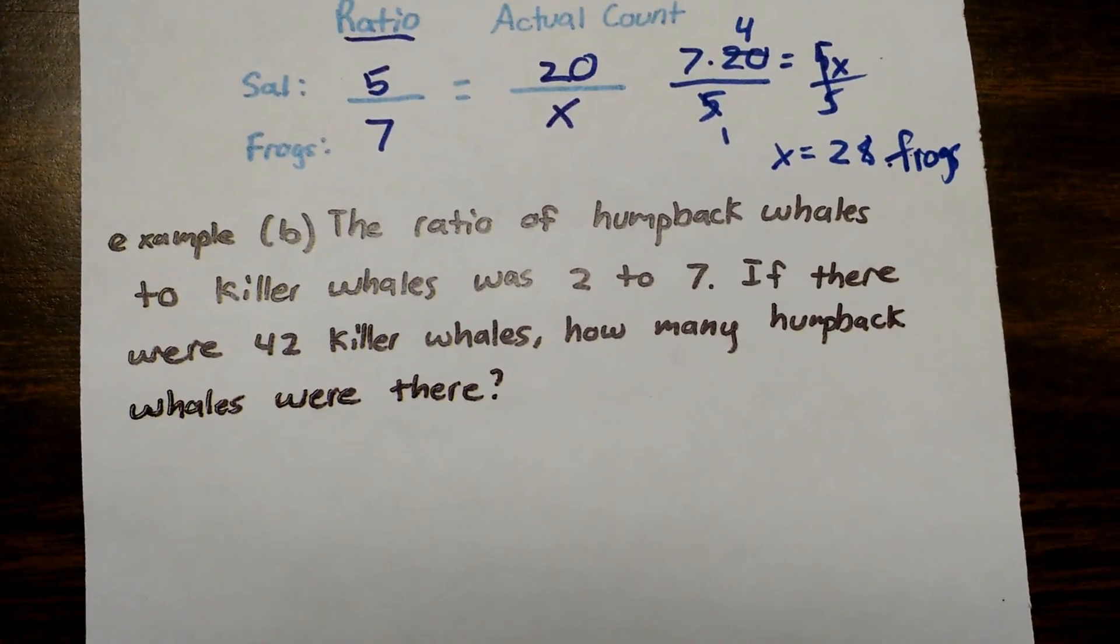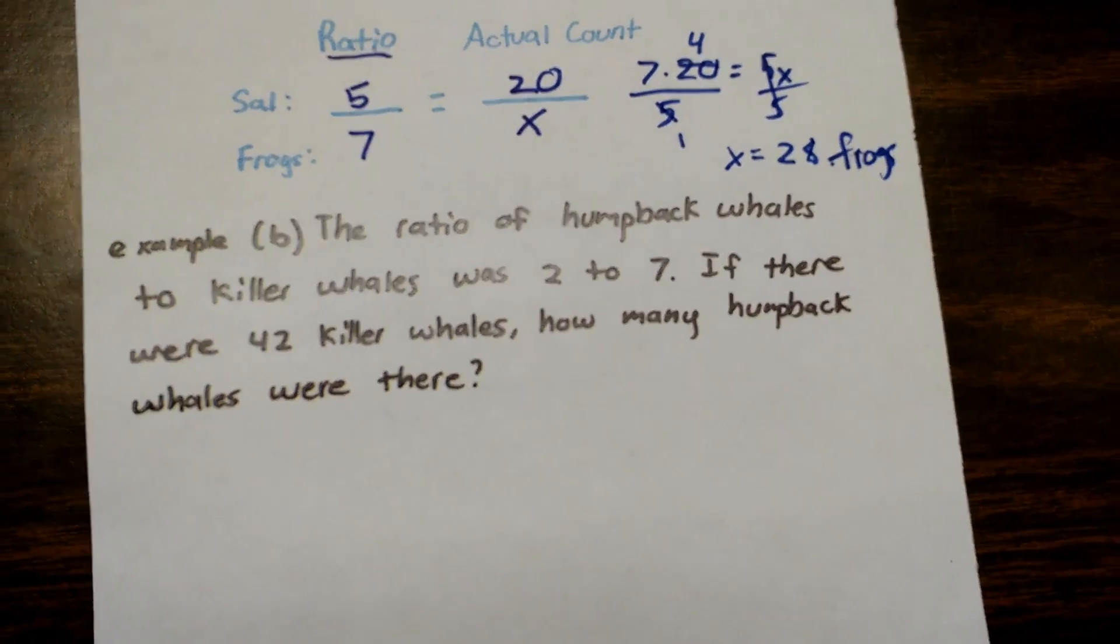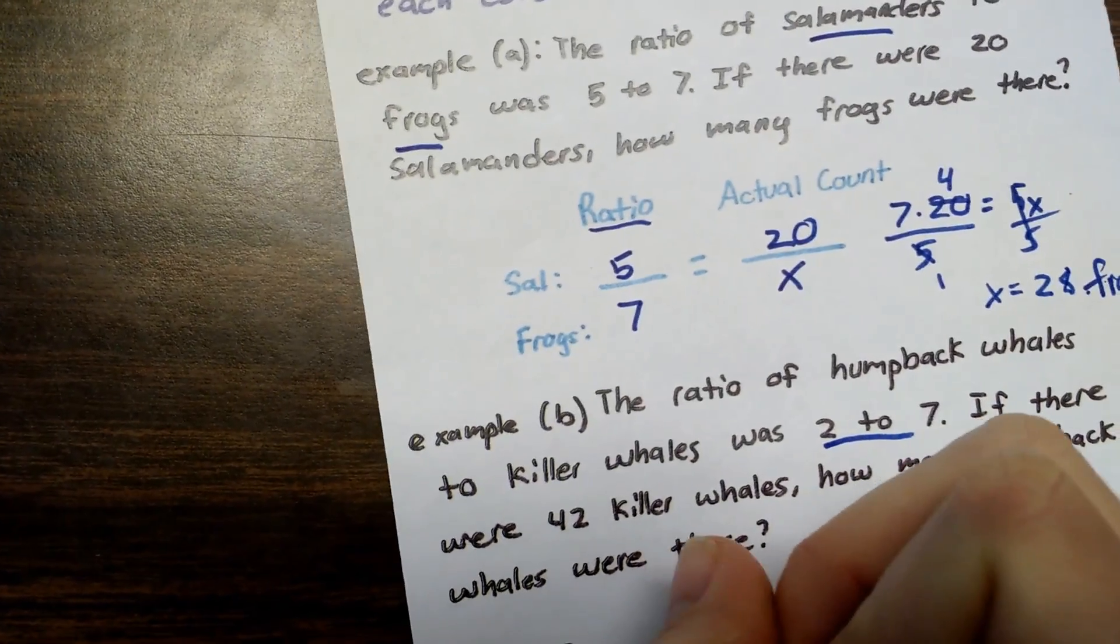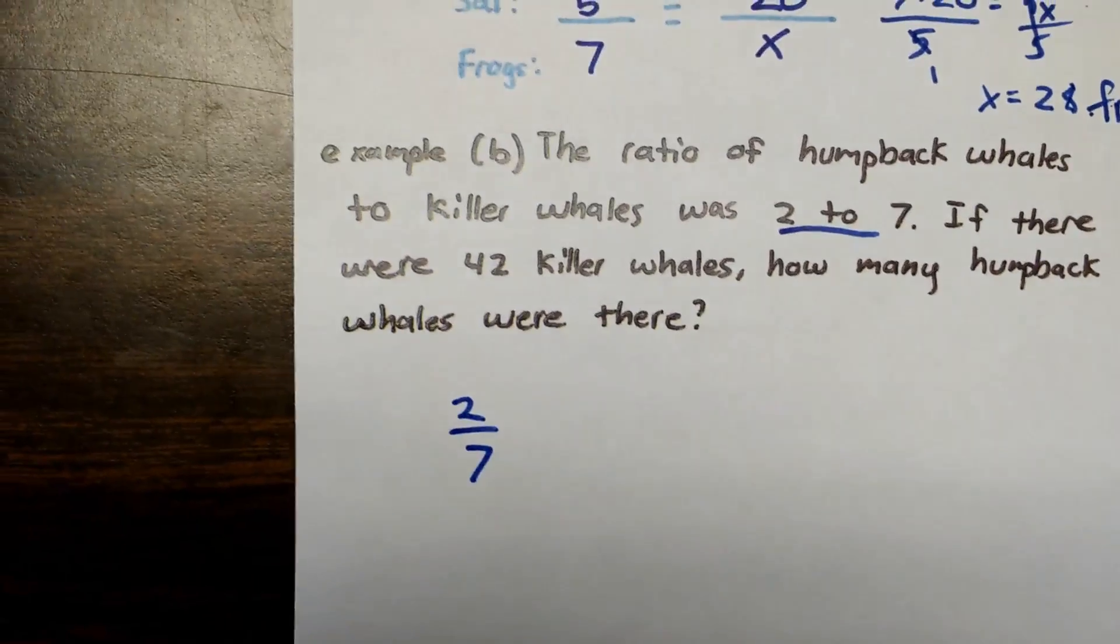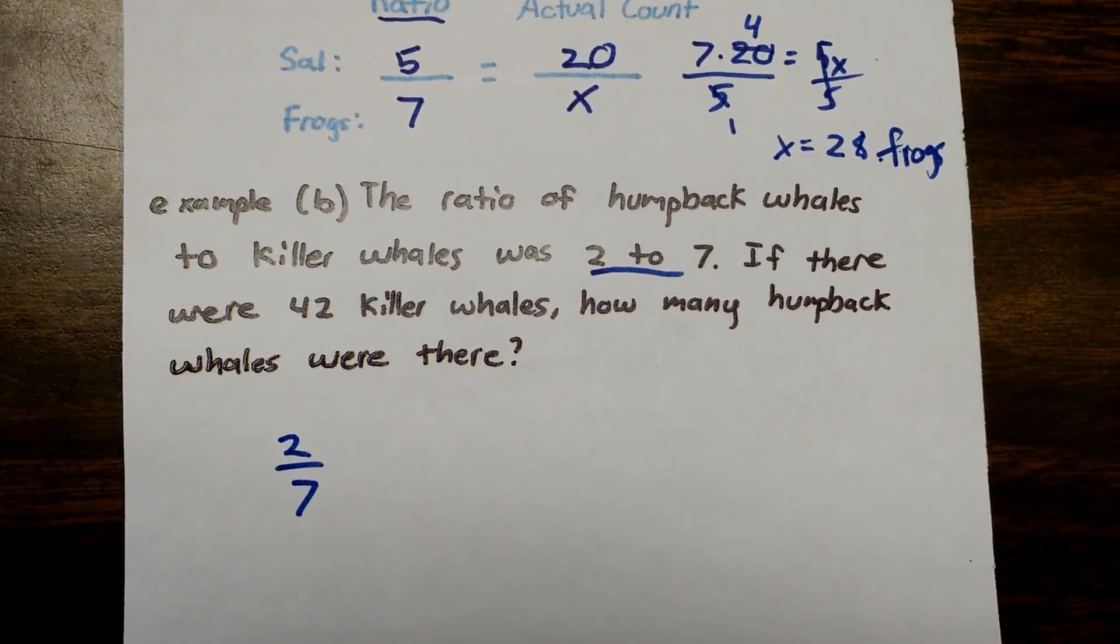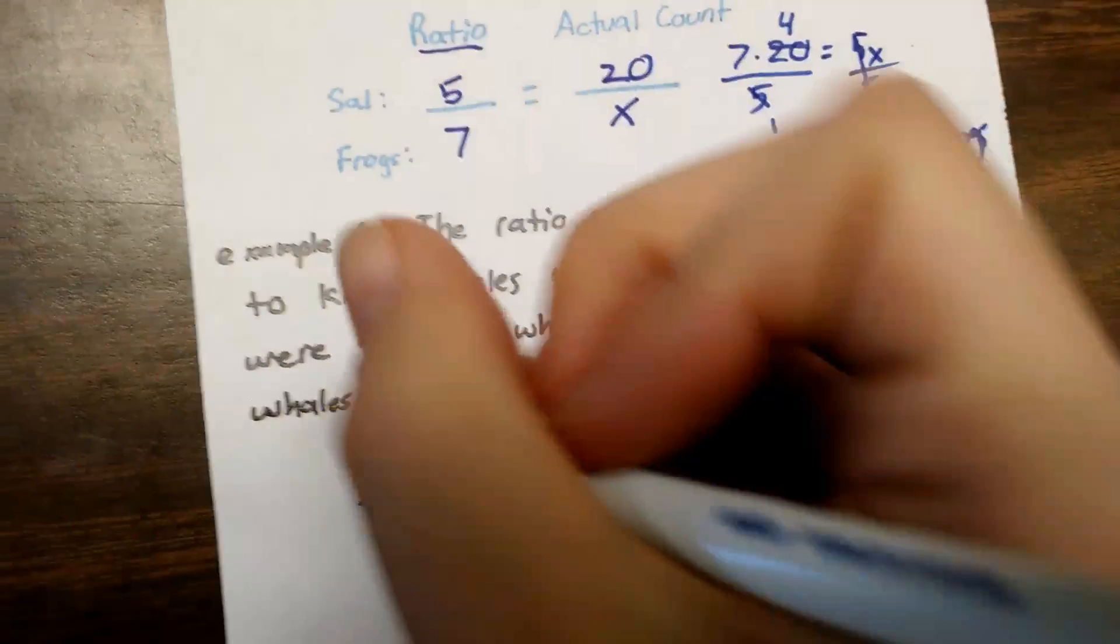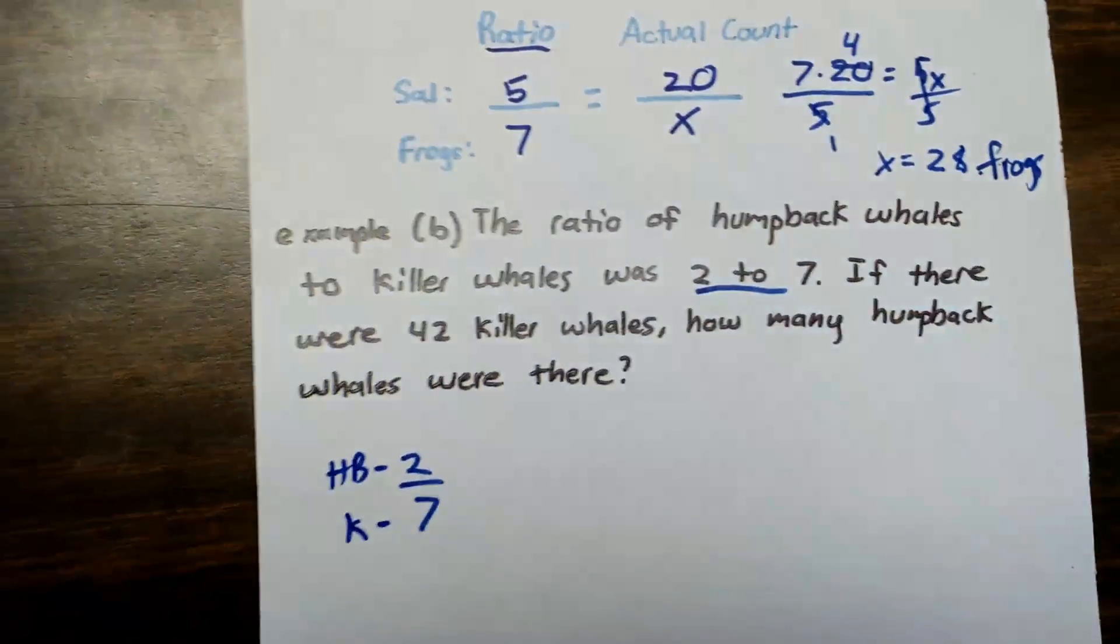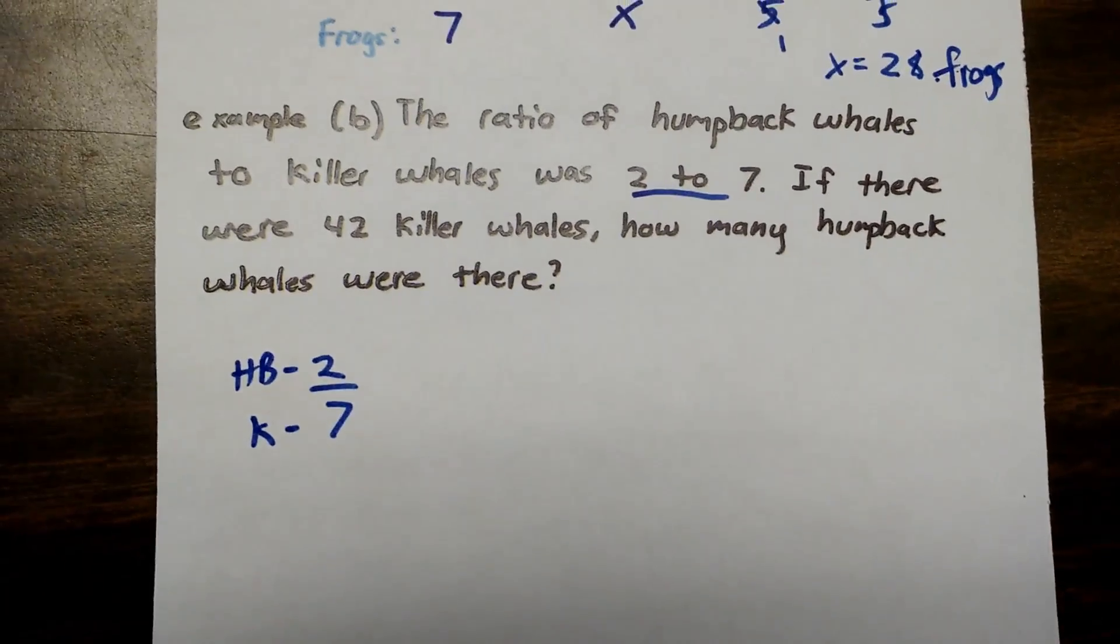And then hit unpause and see if you did it correctly. So my first step is I'm going to write the ratio that they gave me, which is right here, 2 to 7. My next step is going to label which part is the 2 and which part is the 7. So humpback whales to killer whales. So this one is the humpback and this one is the killer whales. And it's okay to just use a letter to label them as long as they're not the same letter.